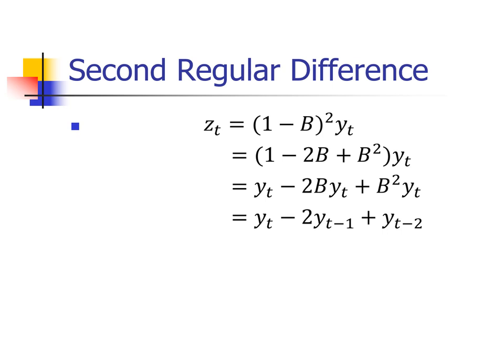For the second regular difference, that's 1 minus B squared times Y sub T. It really does have multiplicative properties, so 1 minus B times 1 minus B, foiled out, gives 1 minus 2B plus B squared times Y sub T. Distributing yields Y sub T minus 2 times Y sub T minus 1 plus Y sub T minus 2. B to the power 2 means shift it back two times.